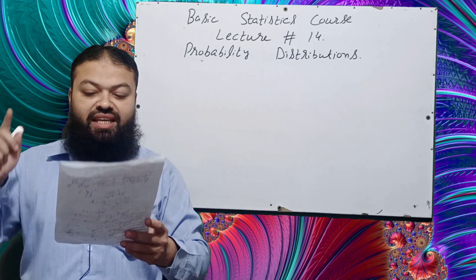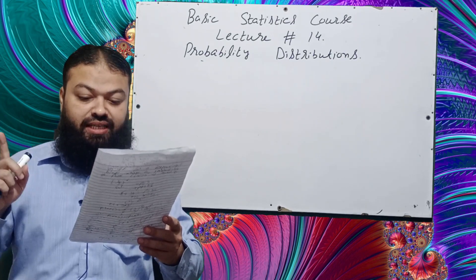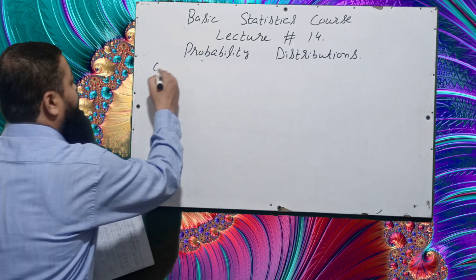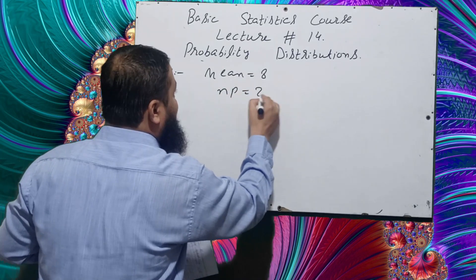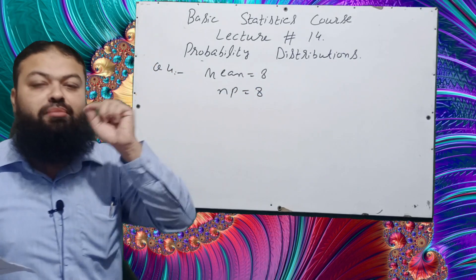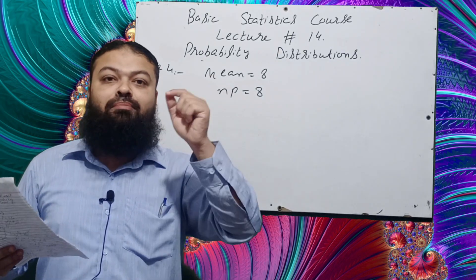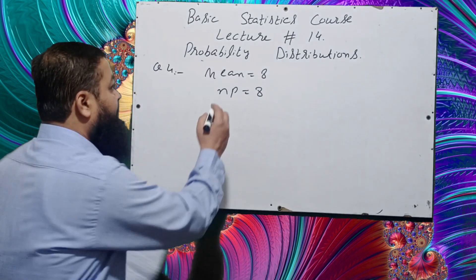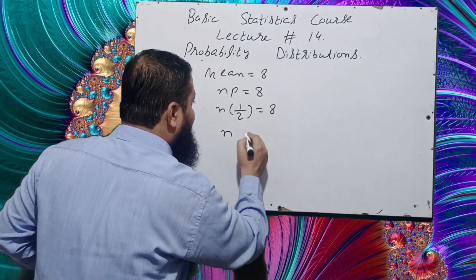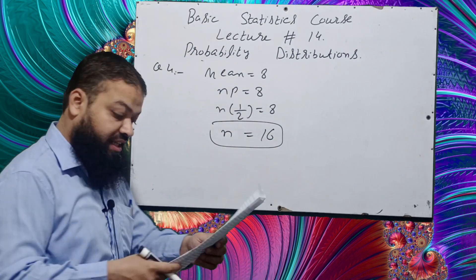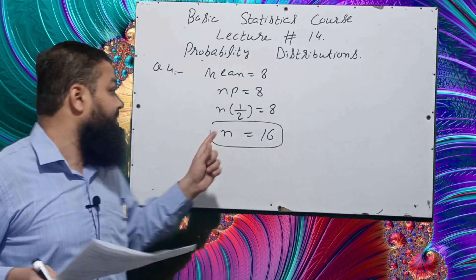Question number four: in a binomial distribution, the occurrence and non-occurrence of an event are equally likely, and the mean is 8. Since P equals Q equals 1/2 and mean NP = 8, we substitute N × (1/2) = 8, which gives N = 16. So the number of trials required is 16, which is the correct option in the exam.